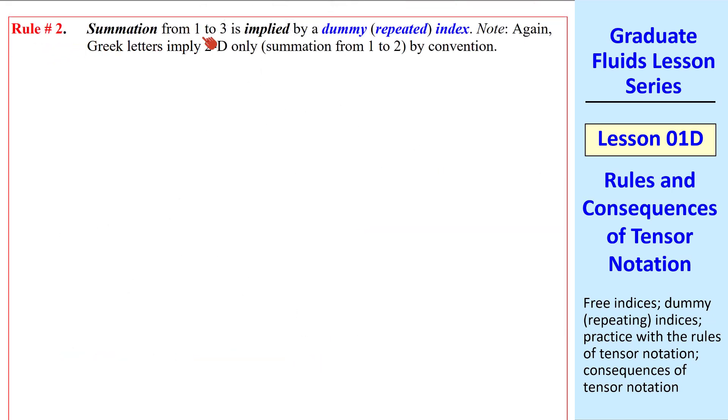Rule number two. Summation from 1 to 3 is implied by a dummy or a repeated index. This is the summation convention that we've already been using. Again, note that if Greek letters are used, some authors imply this as summation from 1 to 2 instead of 1 to 3. Again, this is not a universal convention. So be careful when you have Greek letters as indices.